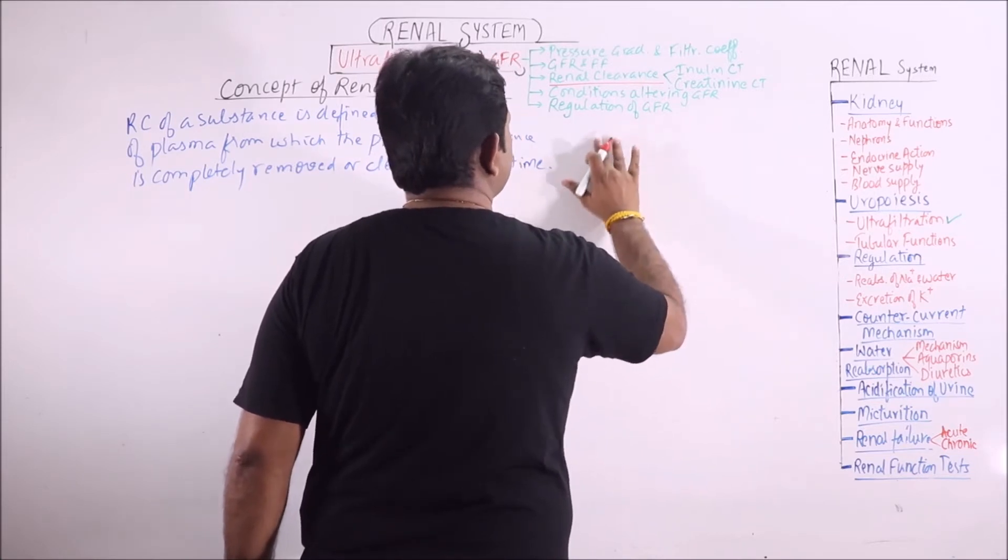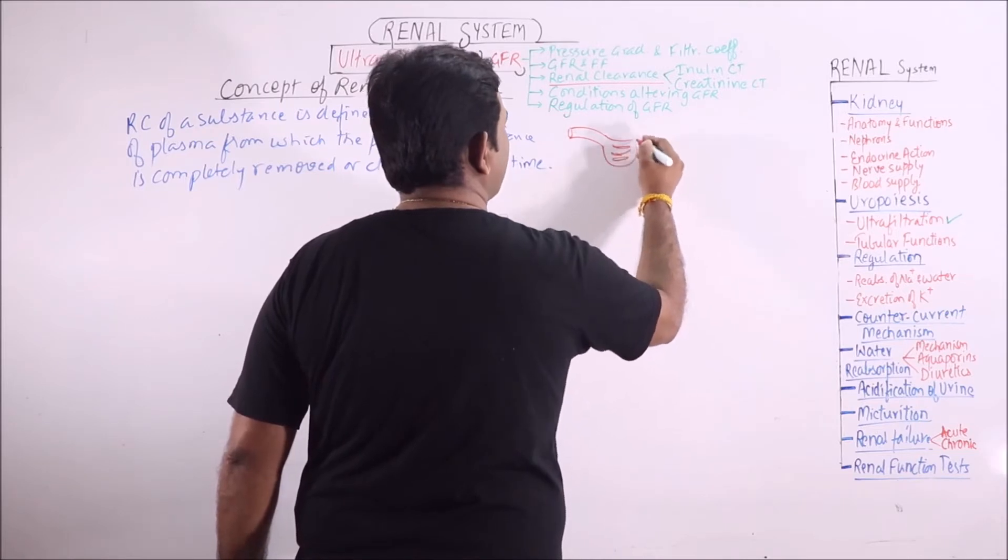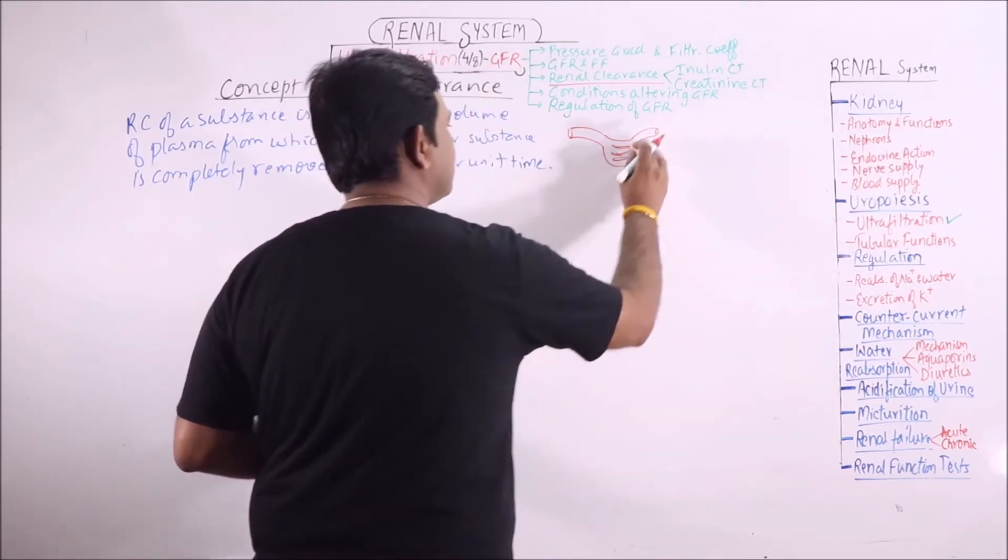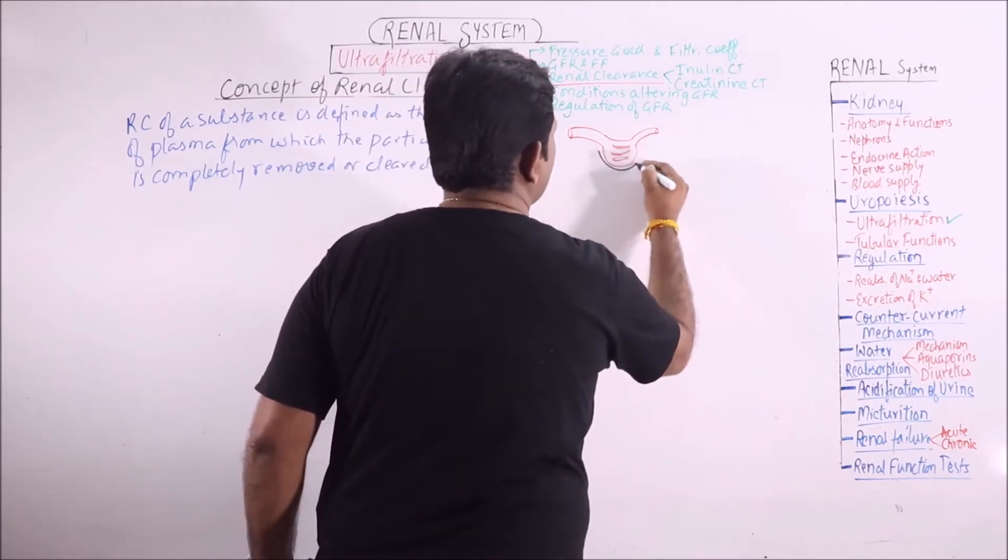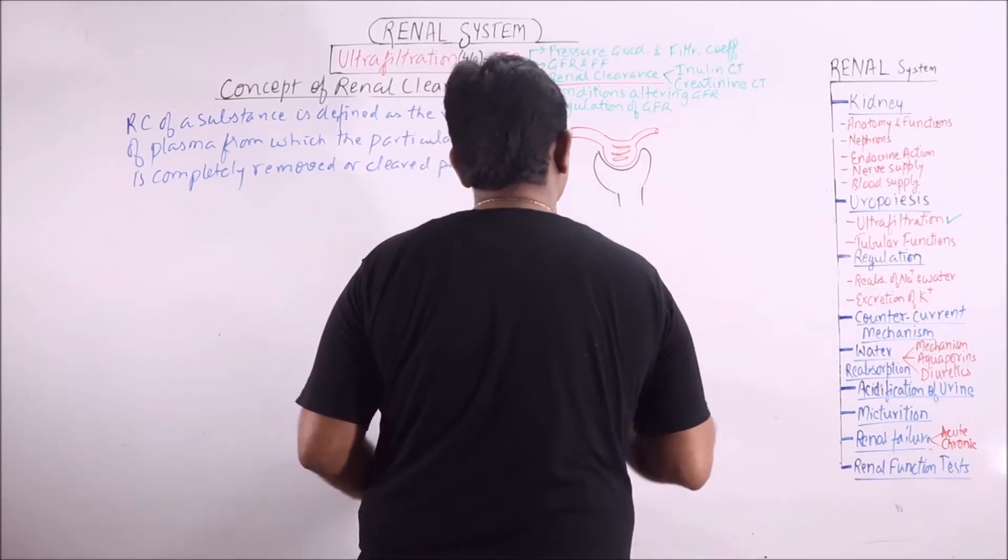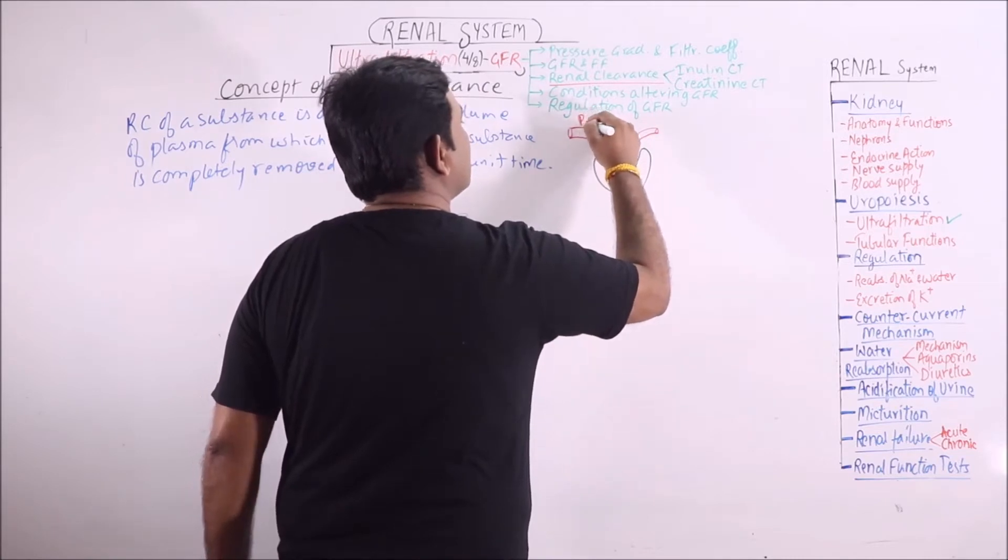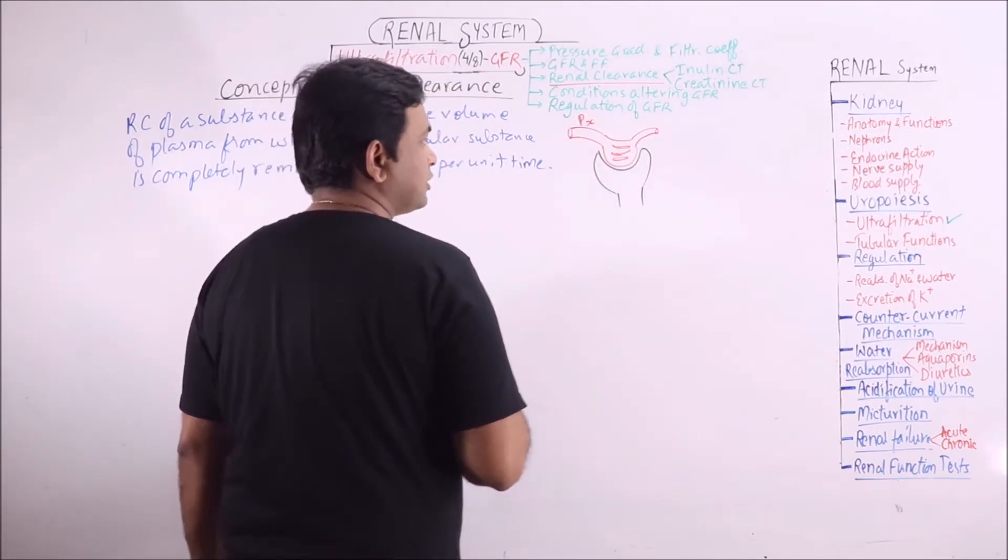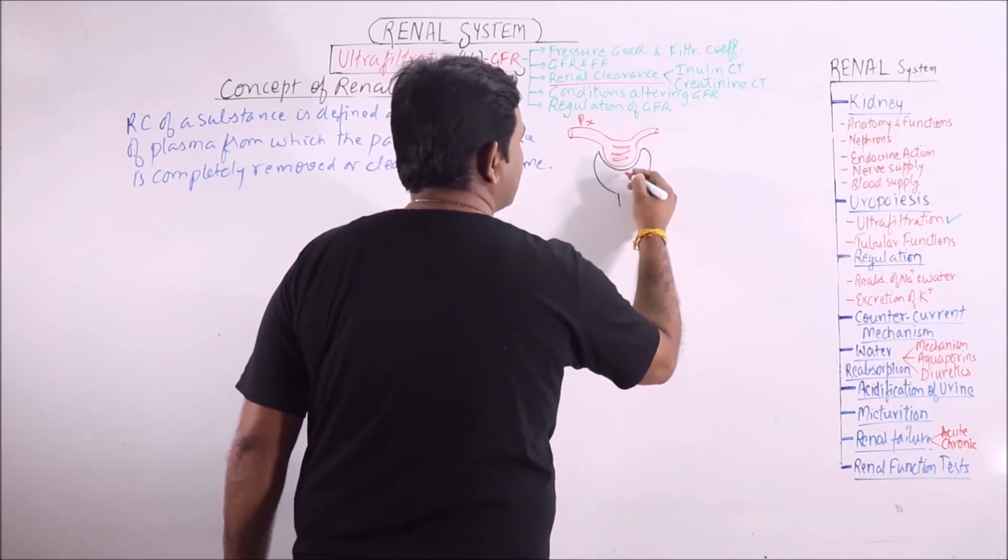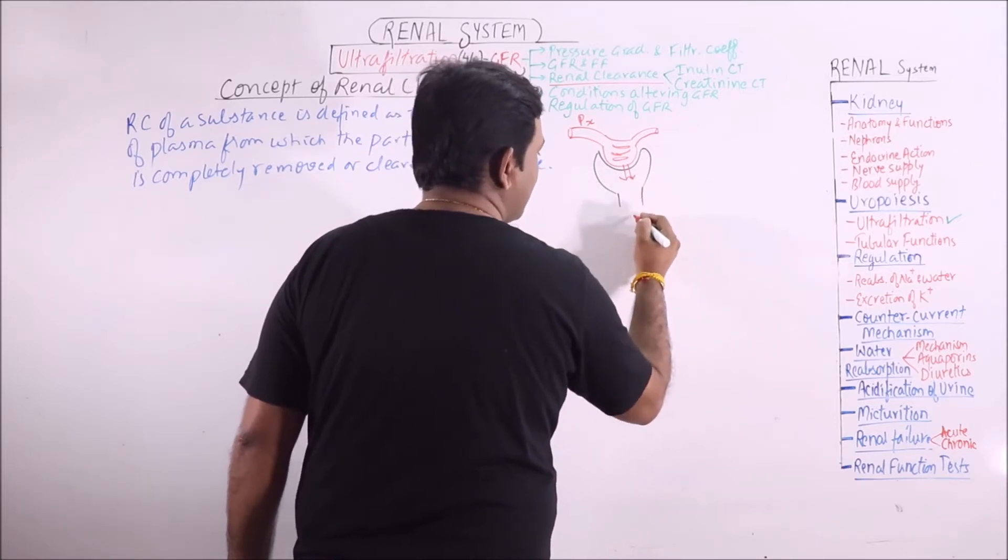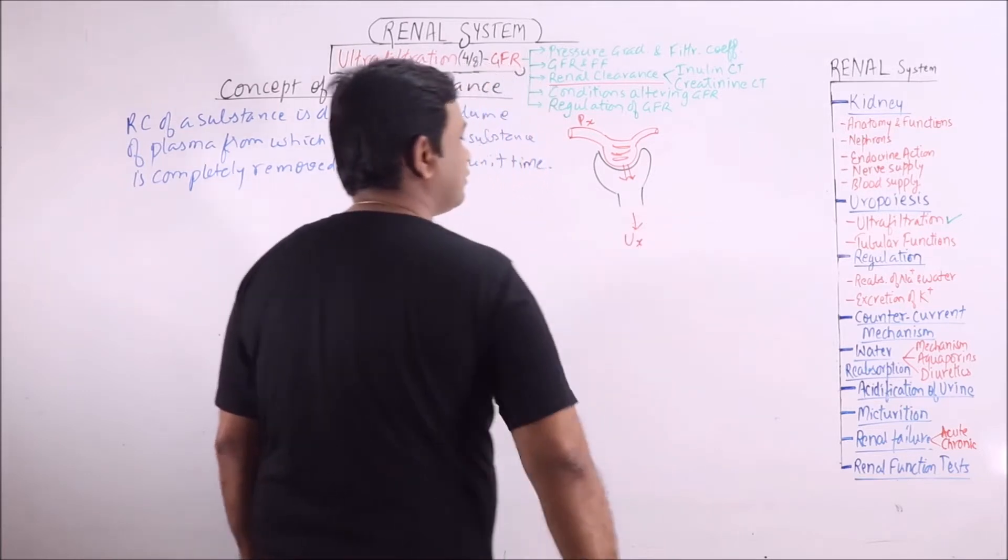If we consider this is the afferent arteriole, this is the glomerulus, this is the efferent arteriole and this one is the Bowman's capsule. This is the plasma concentration of a particular substance in the arteriole. This one is the filtrate. Finally, this will be the concentration of substance in urine.